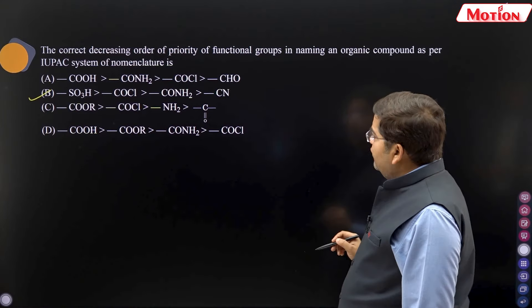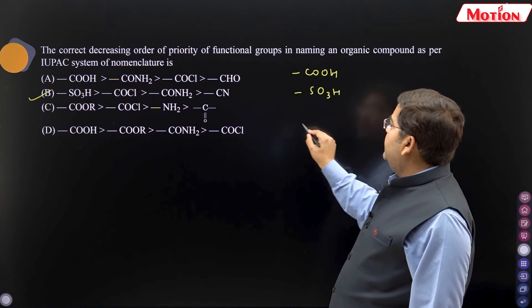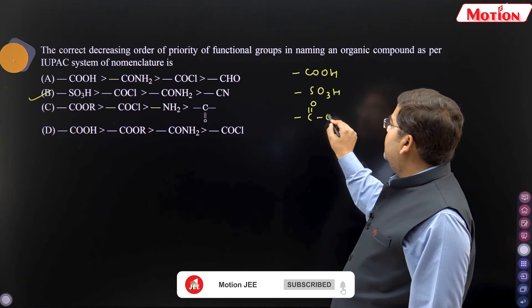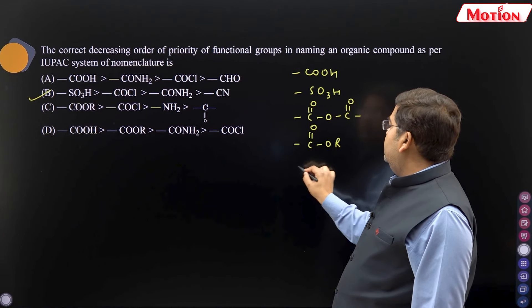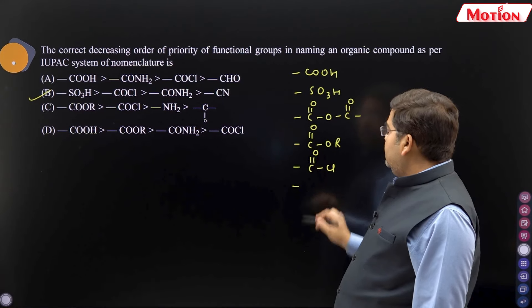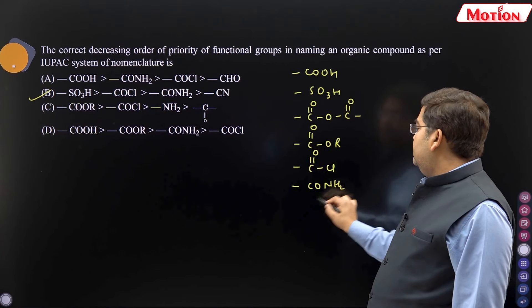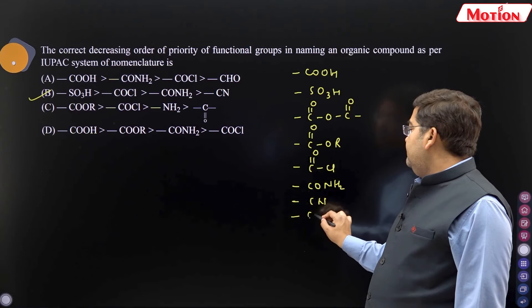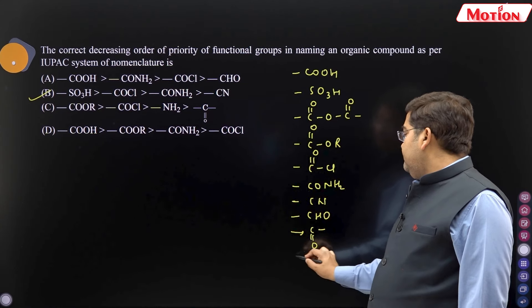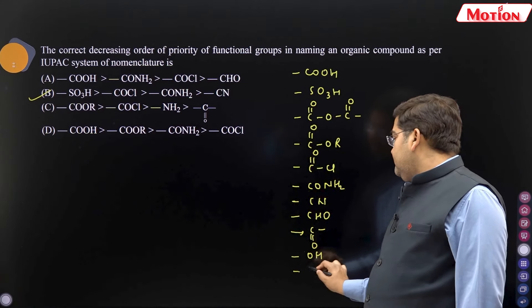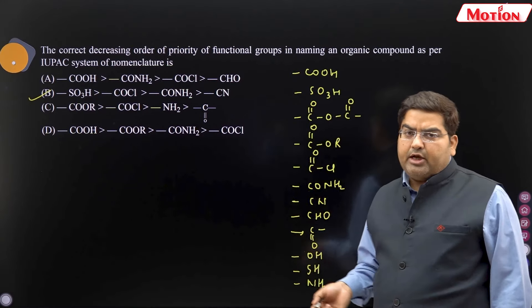First, that's the priority feature of COCL2. The annex function group is called COOH. The name of COOH. Then SO3H, then acid anhydride, then ester, then acid halide, then amide, then cyanide, aldehyde, ketone, alcohol, thioalcohol, amine. Then priority order, this priority order to solve.